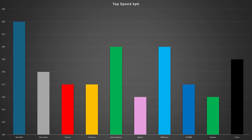One team is looking mighty fast in a straight line and that is Red Bull — at least with Sergio Perez — as he was able to reach a top speed of 322 km/h. The next fastest was the Aston Martin at 320 km/h, though they were struggling with actual performance in the corners, likely lacking some downforce. The slowest cars in a straight line are Alpine and the Saubers, reaching only 316 km/h.